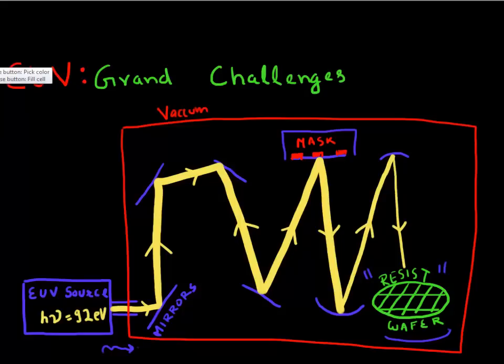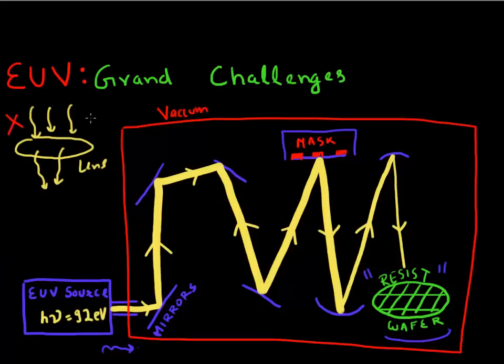And the other challenge is that you can't use any lenses. So typically for deep UV or immersion lithography, you essentially run your incoming photons through a series of lenses and that focuses them. But you can't do this if you have photons of this high energy. Essentially all of them will get absorbed within this lens and you won't get anything out. So lens optics is completely ruled out.